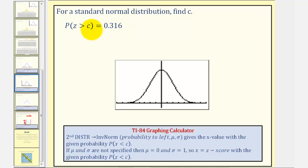We'll find this Z-score, or this value of C, using the TI-84 graphing calculator. But before we do this, notice how we're finding a probability of Z being greater than C, and therefore, we're given an area to the right of a Z-score of the standard normal distribution.